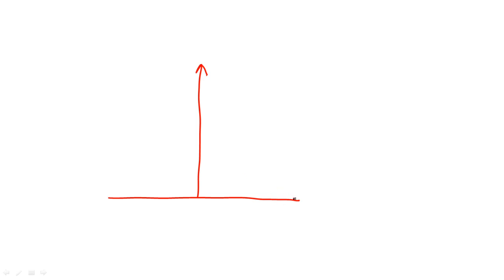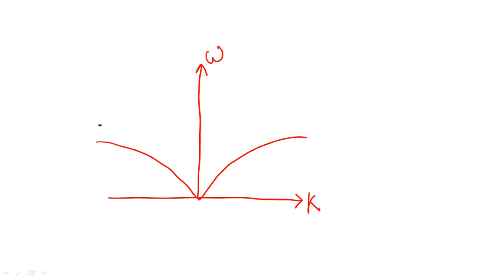Here we are going to have the omega and k axis. The k axis is on the x-axis and this is omega. You are going to get the type of graph like this — you need to take the symmetric graph on both sides. This gap or difference on both sides must be equal. So I should make it exactly the same so that this distance on one side is the same as the other side.